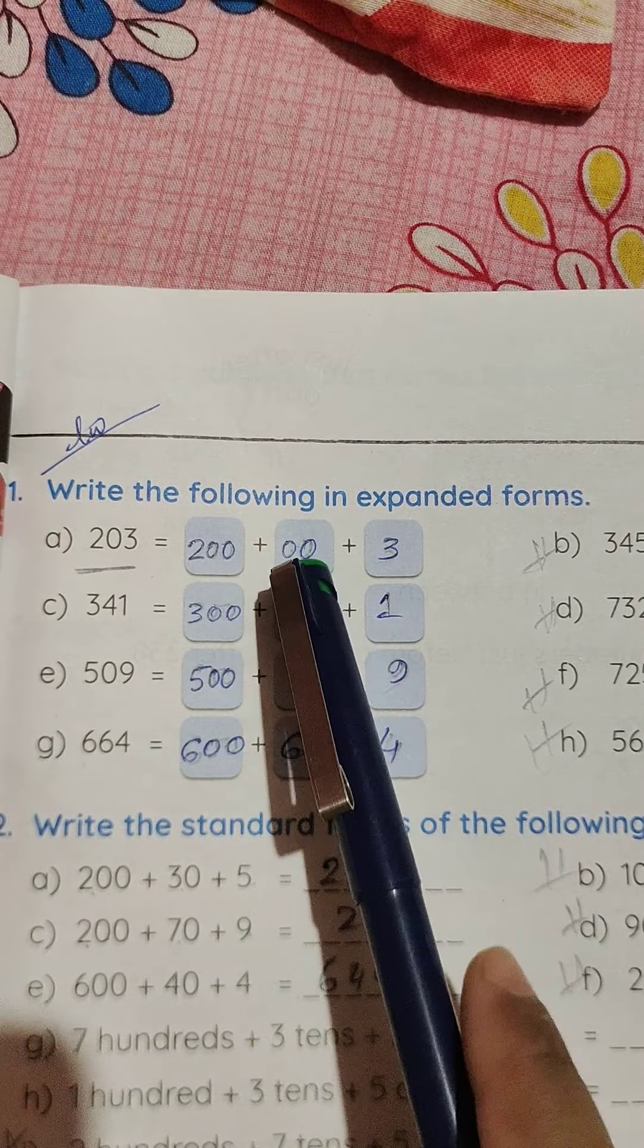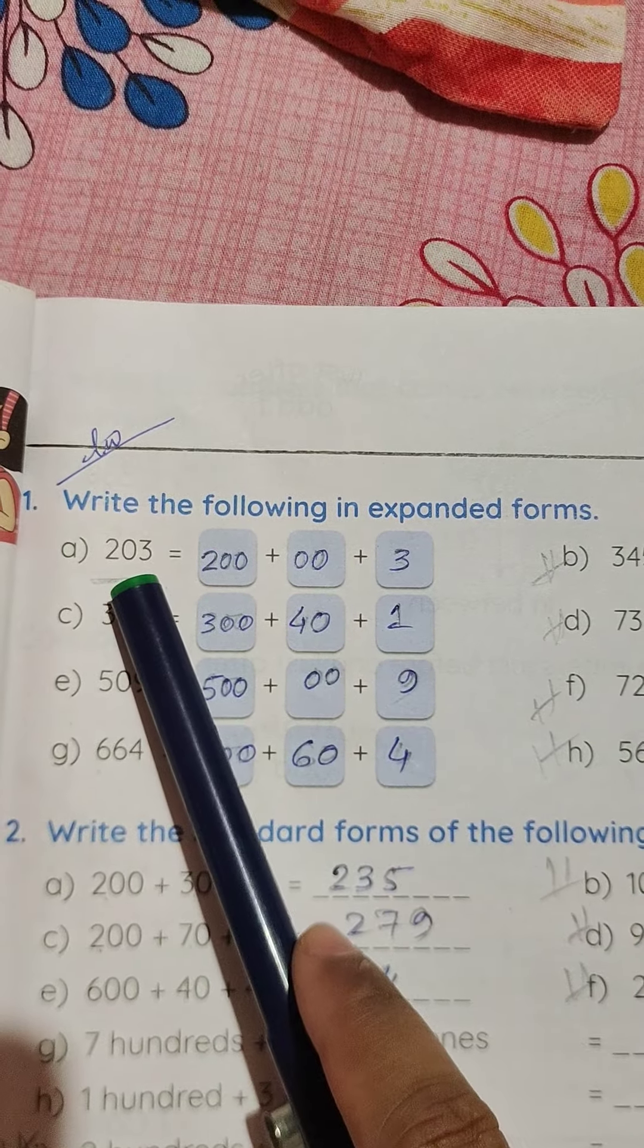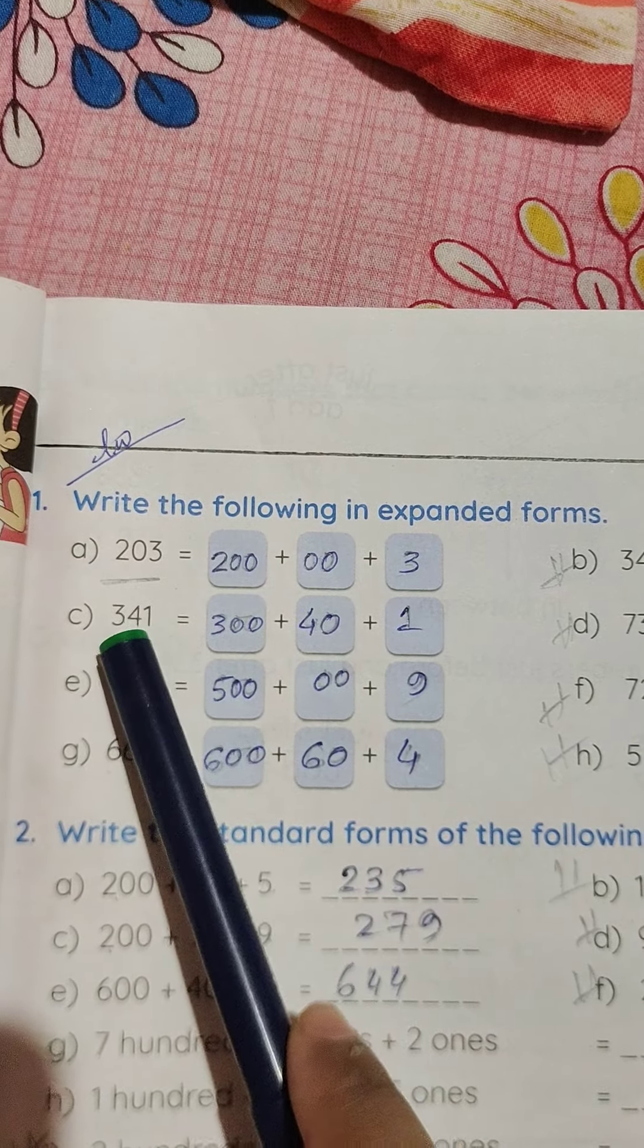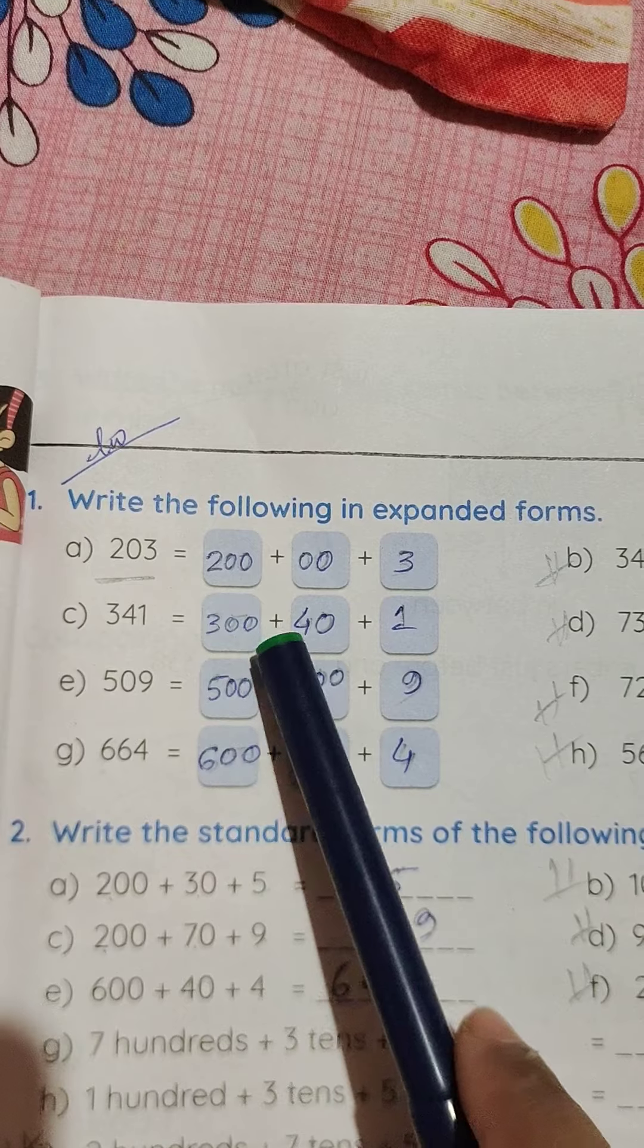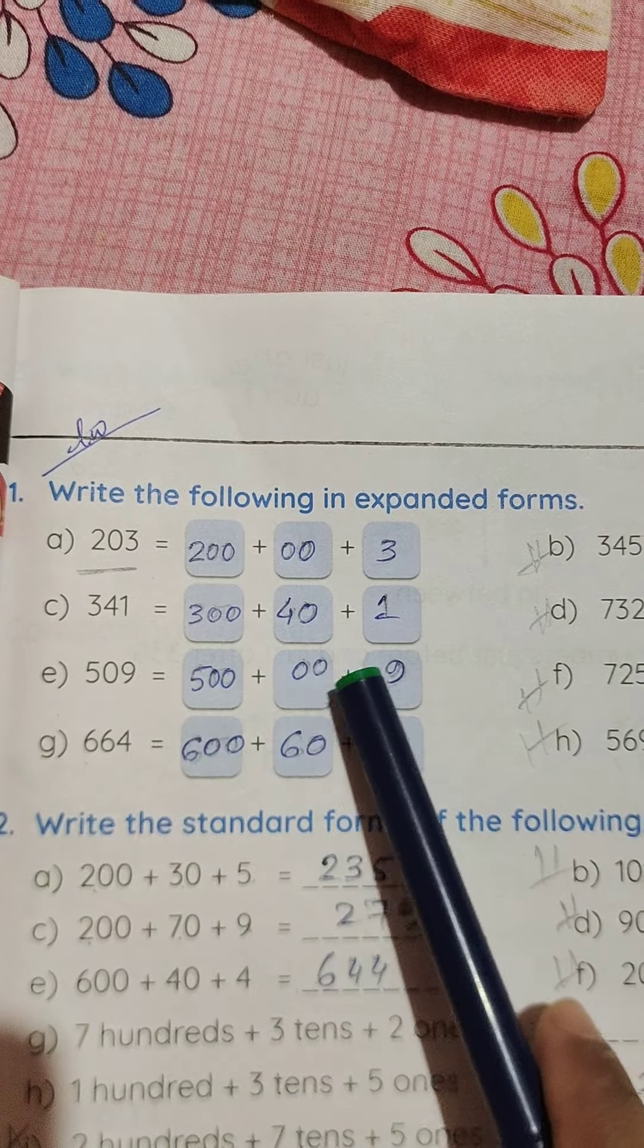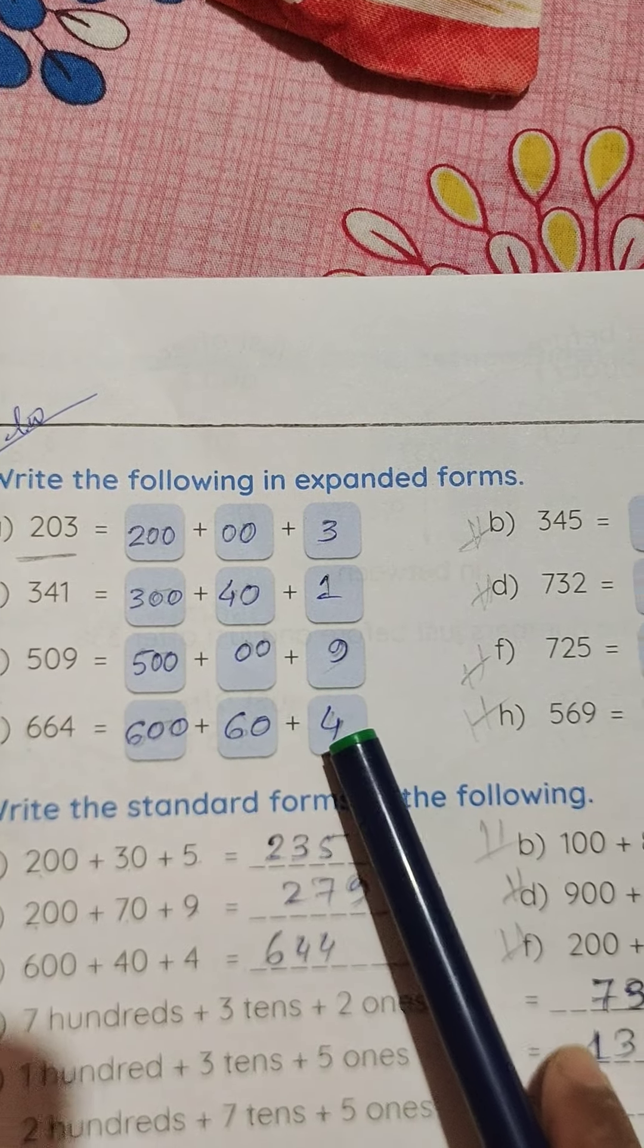Write the following in expanded forms. 203, you have to write 200 plus 00 plus 3. 341, 300 plus 40 plus 1. 509, 500 plus 00 plus 9. 664, 600 plus 60 plus 4.